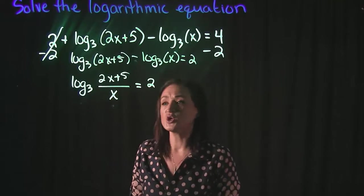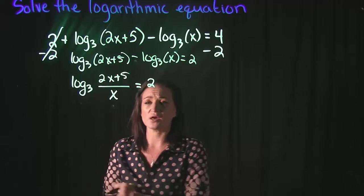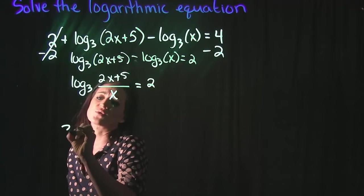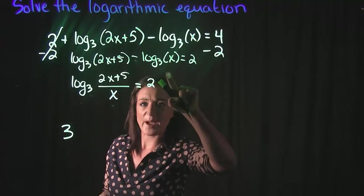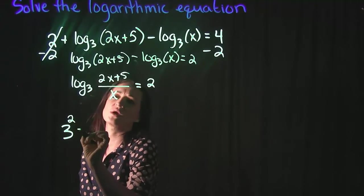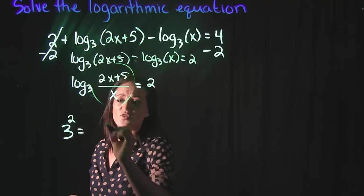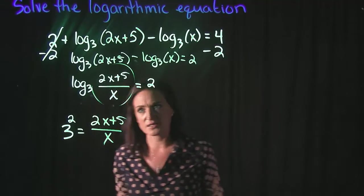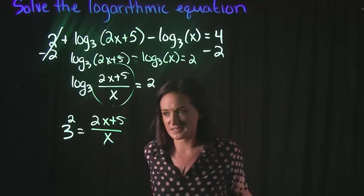At this point here, we then use our log rule here that says that we can do this. So it says that we can take our base 3, raise it to this power over here, so 2, and that's going to equal this right here. So 2x plus 5 over x is equal to 3 squared. Base raised to this is equal to this.